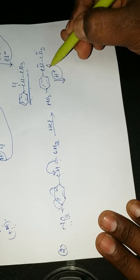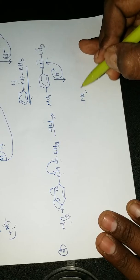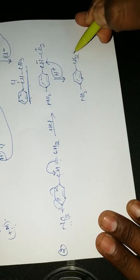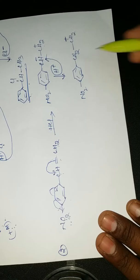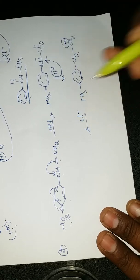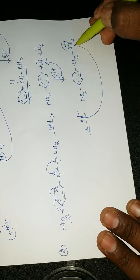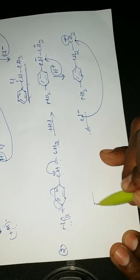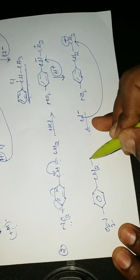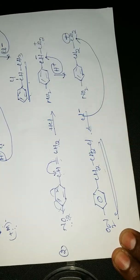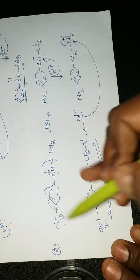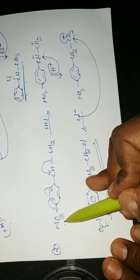So in this equation, H⁺ attacks first. H⁺ attacks the negative charge site — that is the CH⁻ position. This gives the intermediate benzene(NO₂)-CH₂-CH₂⁺. Then Cl⁻ attacks the positive charge position CH₂⁺. The final product is benzene(NO₂)-CH₂-CH₂Cl. This is the final product.